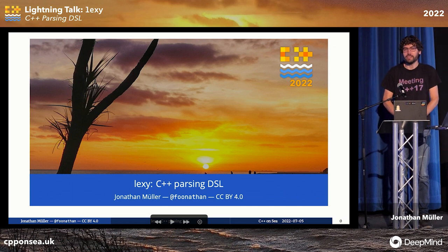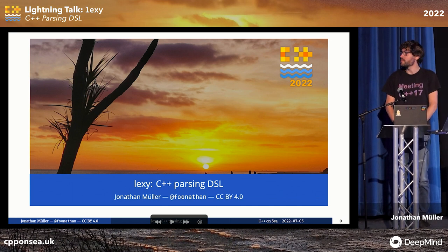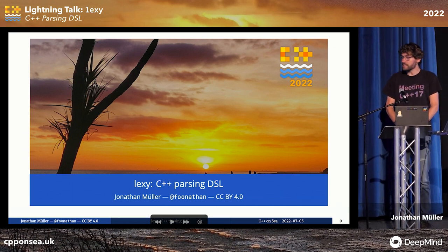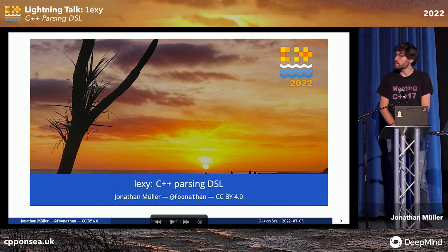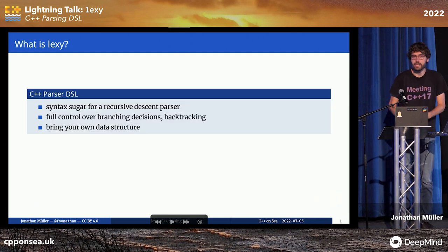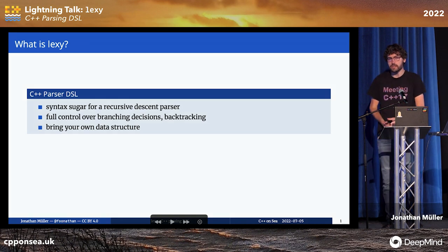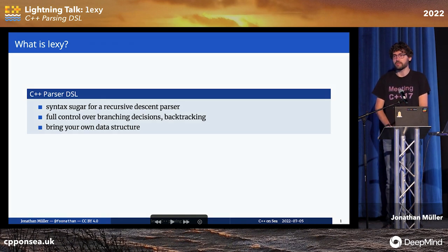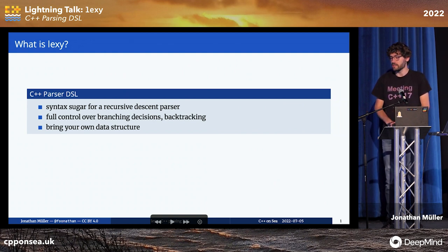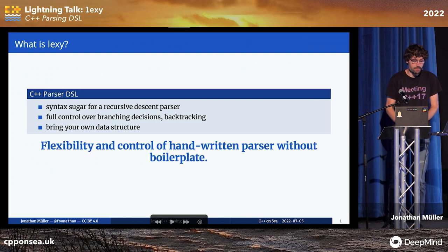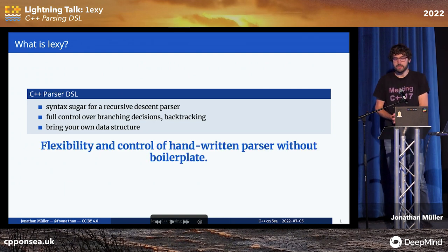I'm going to talk about a library I've been working on for the past two years. It's Lexi — a C++ parsing DSL library you can use to write parsers. It's essentially syntax sugar for a recursive descent parser, which means you have full control over branching decisions, over backtracking, and you can parse into your own data structures. You get the flexibility and control of a handwritten parser without any of the boilerplate.